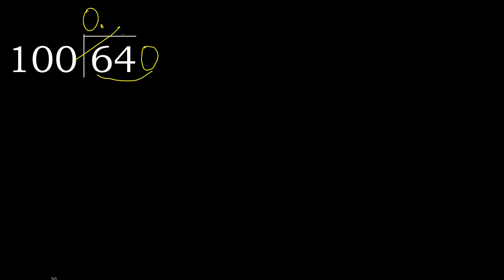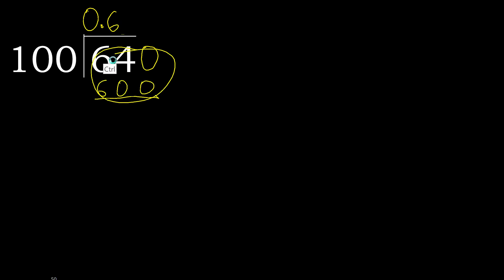100 multiplied by which number is nearest to 640 but not greater? 100 multiplied by 7 is 700 — that is greater. Multiplied by 6 is 600 — that is not greater. Subtract: the result is 40.